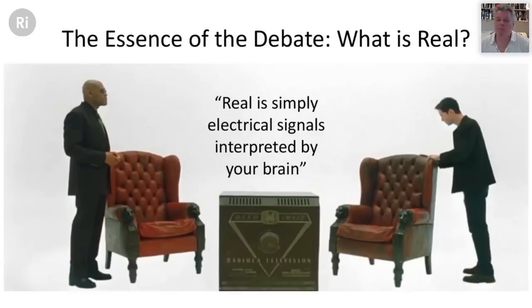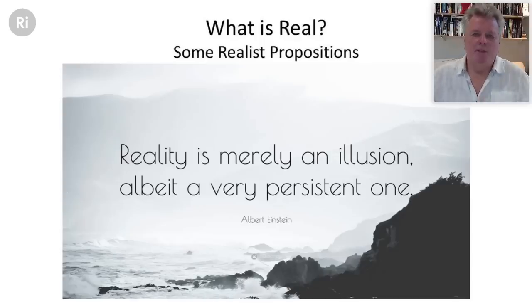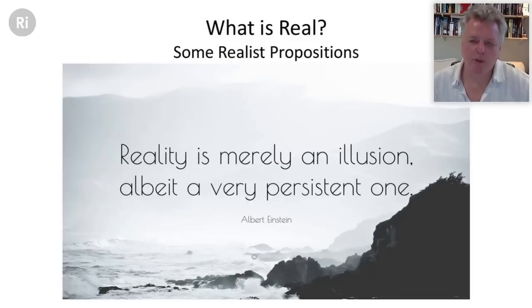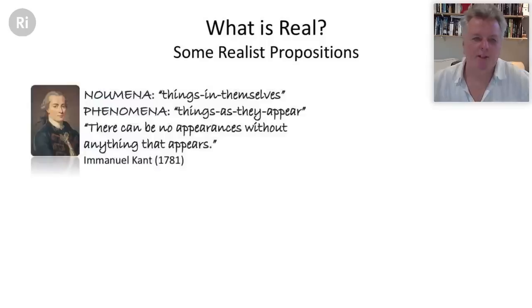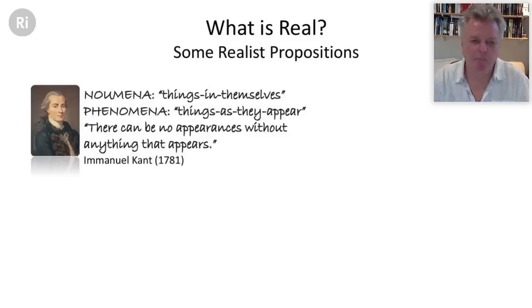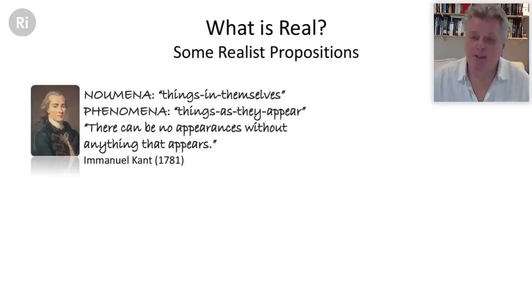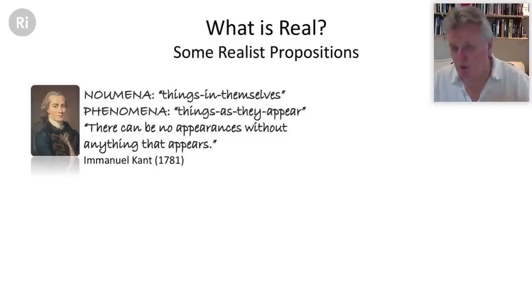To answer the question 'what is real?' in relation to quantum mechanics, we start with two realist propositions. The great German philosopher Immanuel Kant in 1781 distinguished between noumena and phenomena. What we sense are things as they appear — my desk as it appears, my computer as it appears. Noumena are the things underneath, the things in themselves. There is absolutely no way we can know things in themselves; we can only acquire knowledge of things as they appear. But Kant insisted importantly that there can be no appearances without anything that appears.